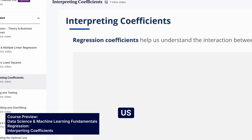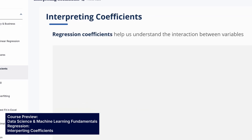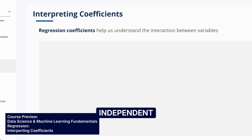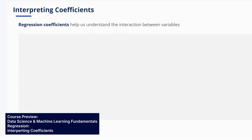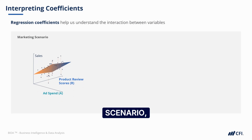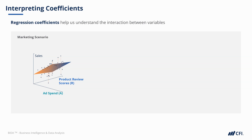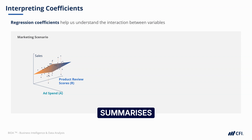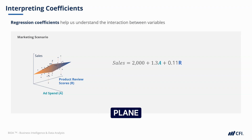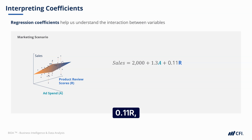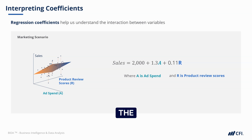Regression coefficients help us understand the interaction between variables, and each independent variable has its own coefficient. In the context of a marketing scenario, where we have both ad spend and product review scores as inputs, we're trying to make predictions about sales. We can see that this plane summarizes the data points. The equation for the plane is: Sales equals 2000 — that's the intercept — plus 1.3a plus 0.11r, where a is ad spend and r is product review scores.